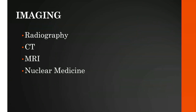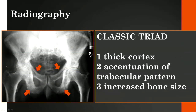You will encounter Paget's disease on all modalities. Radiography is our primary modality, and you should be familiar with the classic triad: first, a thickened cortex; second, accentuation of the trabecular pattern; and third, a relative increase in bone size compared to normal bones. Depending on the phase of Paget's disease, we may not see all components of this triad. The natural history includes three phases.